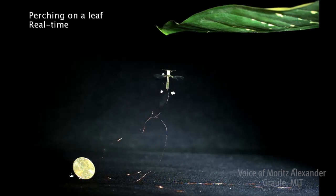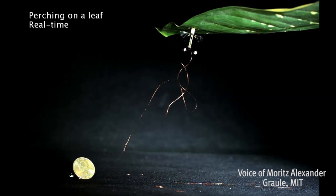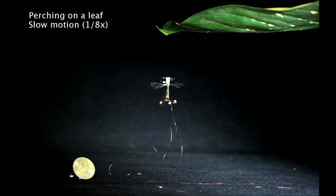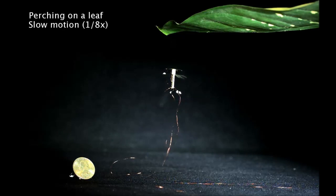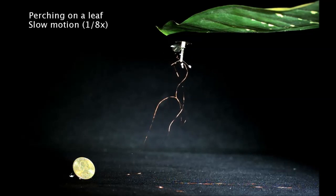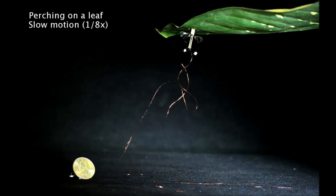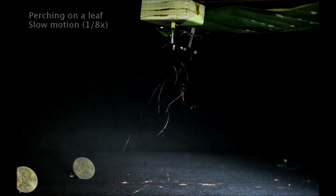When we approach a leaf, there are two things that are important. First, our electric adhesive patch needs to be aligned with the leaf. And second, we want to limit the rebound—we don't want to bounce off the leaf so we can stay close to it. Both of these are addressed with a very simple solution: we put this yellow foam mount that absorbs energy upon impact and ensures that both criteria are fulfilled.